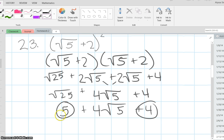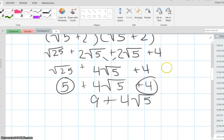Then you can combine these terms. So it's 9 plus 4 times the square root of 5. You can't simplify any further, so this is your final answer.